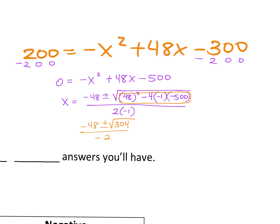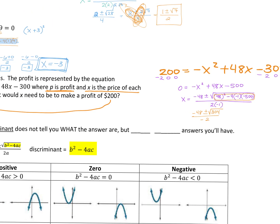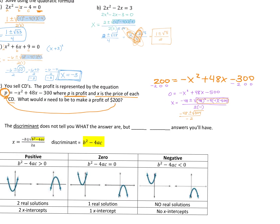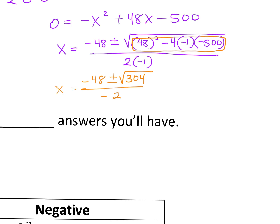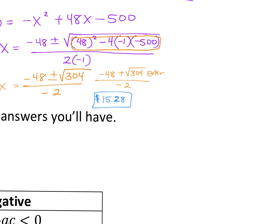Now this is a real-world problem — they're asking what X needs to be to make a profit of $200, so we're looking for the price of a CD. You're going to plug in negative 48 plus the square root of 304, hit enter, then divide by negative two. Because it's money, round to two decimal places — so $15.28 for that one.